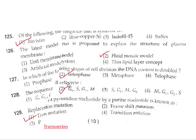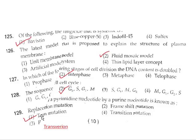Question 128: The sequence of the cell cycle is G1 (first gap phase), then S phase (synthetic phase), then G2 phase, then mitotic phase. So the correct answer is option 2. Question 129: Replacement mutation of a pyrimidine nucleotide by a purine nucleotide is called transversion mutation. Option 1.